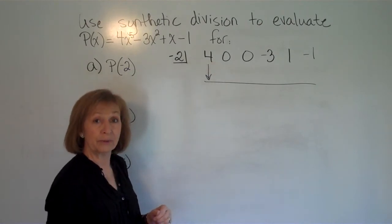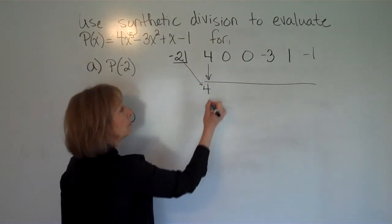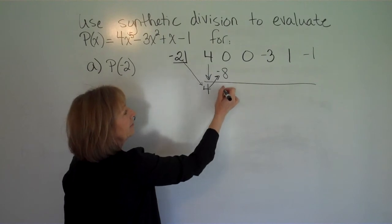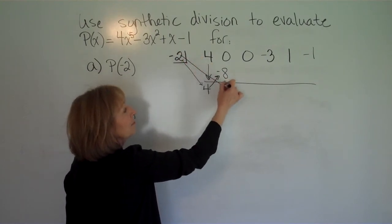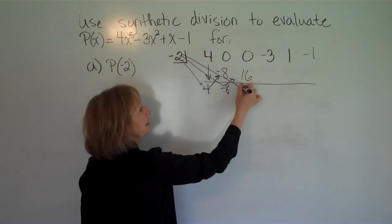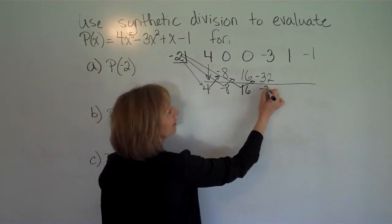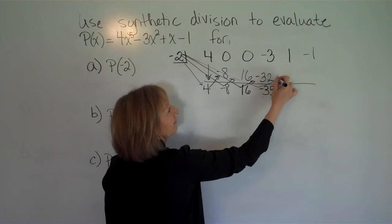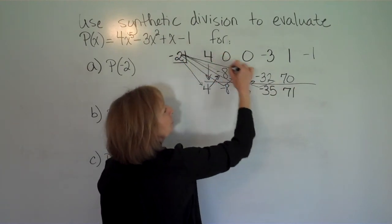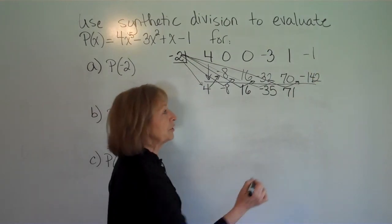Drop down a line and draw your horizontal line, then bring the first number down without doing anything to it. Then multiply what's in the half box times that number: negative 2 times 4 is negative 8. Write it underneath the next term: 0 plus negative 8 is negative 8. Negative 2 times negative 8 is positive 16. 0 plus 16 is 16. Negative 2 times 16 is negative 32. Negative 3 plus negative 32 is negative 35. Negative 2 times negative 35 is 70. 1 plus 70 is 71. Negative 2 times 71 is negative 142, and negative 1 plus negative 142 is negative 143.